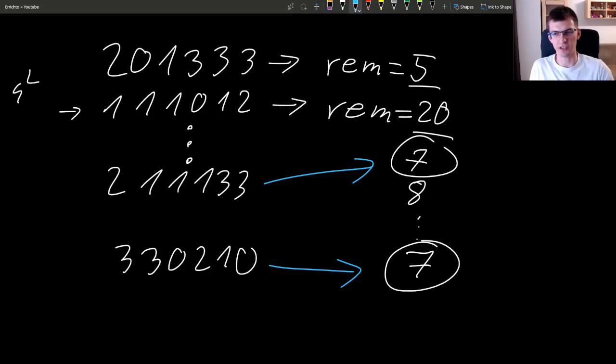And now the difference of them will have remainder 0. If two numbers give us remainder 7 modulo x, then their difference will give us remainder 0. So the difference is divisible.